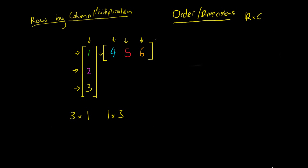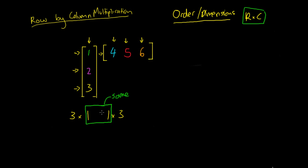In past videos I've said that this R by C order is really important, and here is where we're going to look at why. When you're doing a multiplication of two matrices, what's really important is that the two inside numbers match — the number of columns in your first matrix must match the number of rows in your second matrix. If these numbers aren't the same, you can't actually multiply your matrices together.